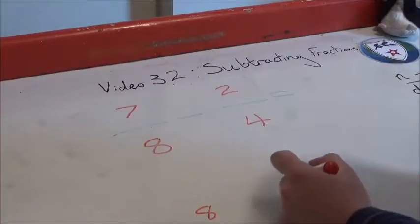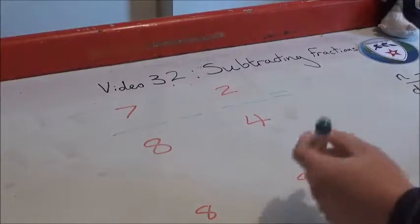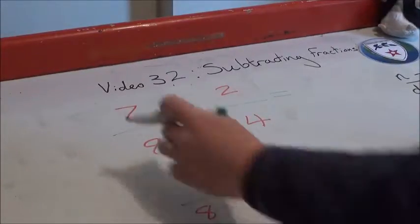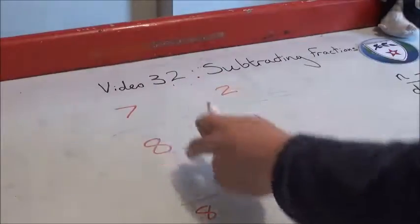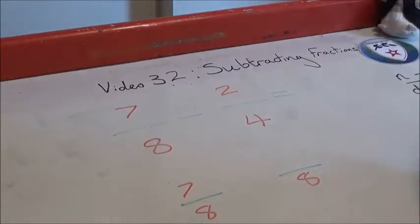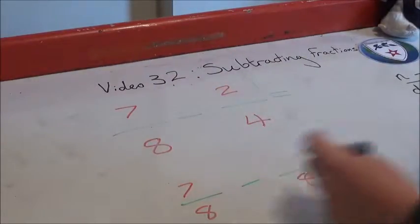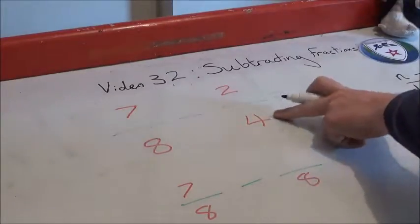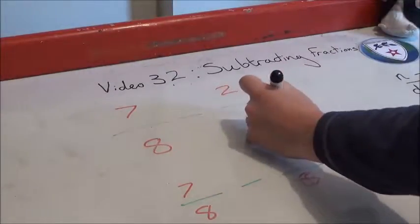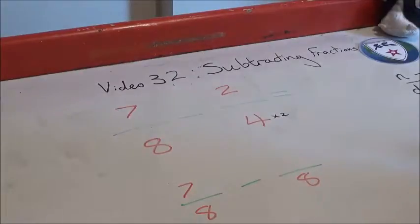Here, we're going to stick with eight. Straight away, I can keep the same thing, so seven-eighths is staying the same. Take away. But here, to get from four to eight, I need to multiply that by two.